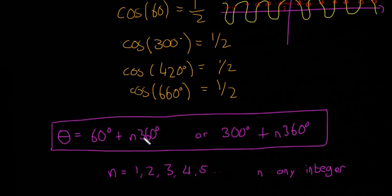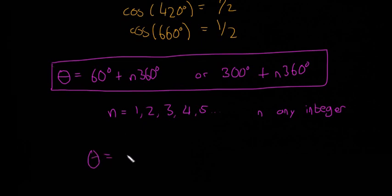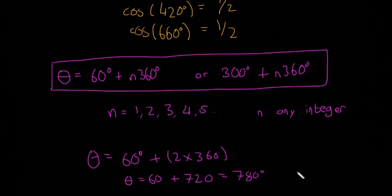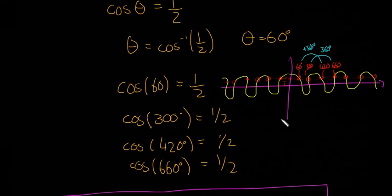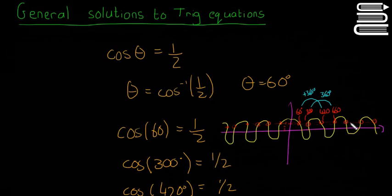So if you sub 2 into n, theta is equal to theta is equal to 60 plus 2 multiplied by 360. So that's going to be theta equals 60 plus 720, and that's going to be equal to 780 degrees. If you want to sub that into your calculator, cos(780), your answer will be 1/2. So no matter what number you put in as n, your answer will still be 1/2. So this is our solution here - this one line gives us every single possible answer where cos(θ) is equal to 1/2, every time that red line hits the yellow line. Does that make sense?